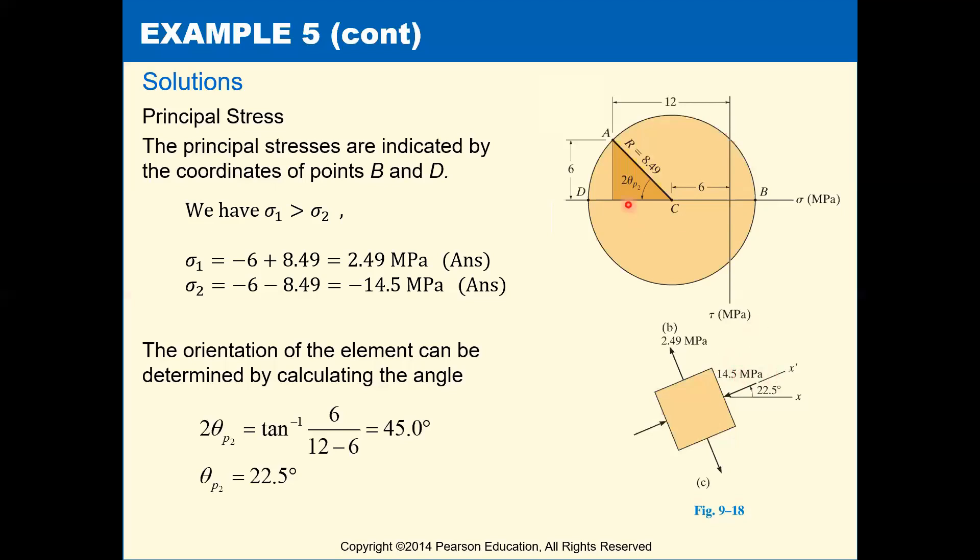If we were to go a further 180 degrees, take us to point B, would be the same as going 90 degrees on our element. Remember, because of this 2 theta versus theta relationship. So that 90 degrees would take us to sigma 1 at point B, which is our maximum tensile normal stress of 2.49 megapascals.